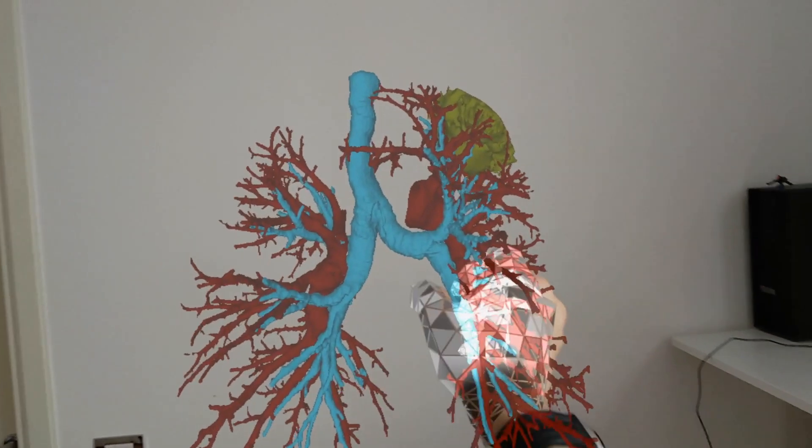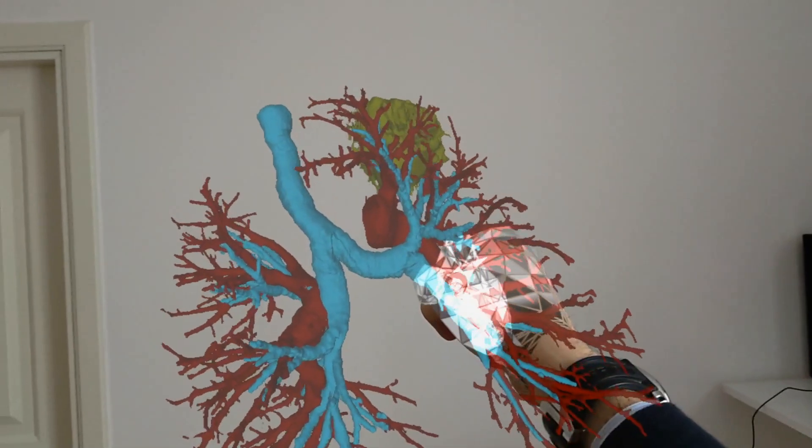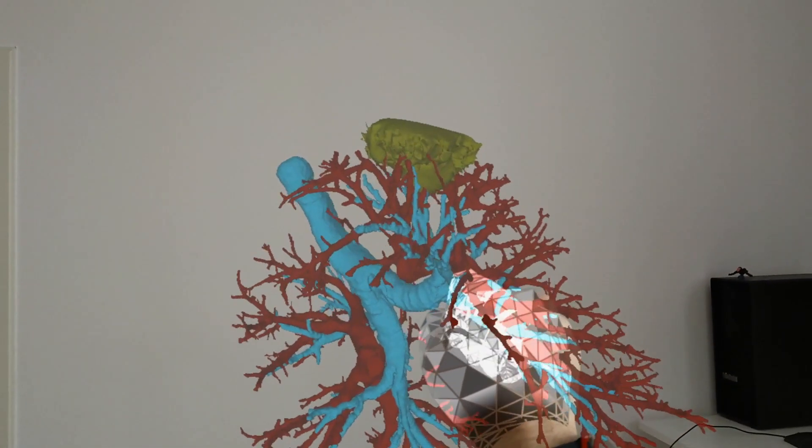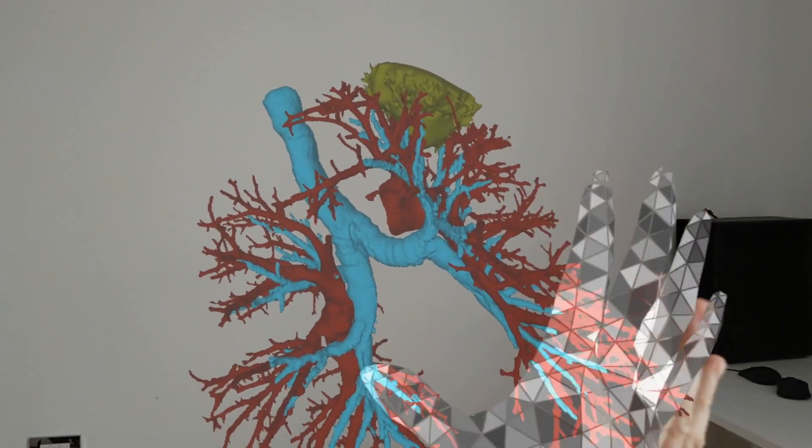So, you can see here the light blue bronchial tree and the red pulmonary artery system in a patient with a tumor of the left upper lobe.